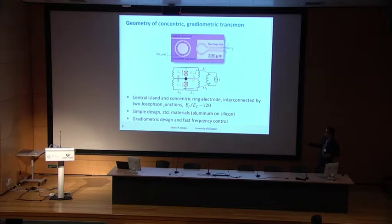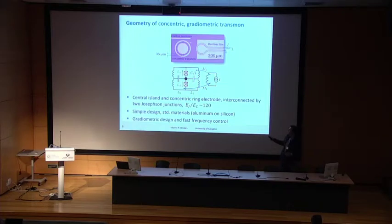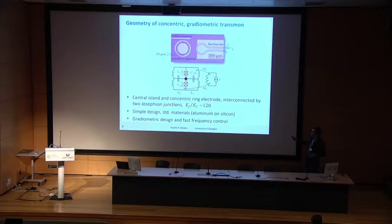We have two Josephson junctions forming a split junction in a DC-SQUID geometry. There's a readout resonator — a microstrip lambda-half resonator on top — for dispersive readout of our qubit. On chip we also have a local flux bias which is impedance matched.